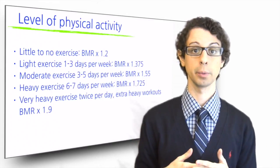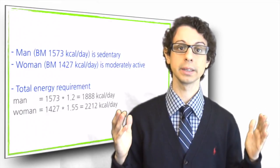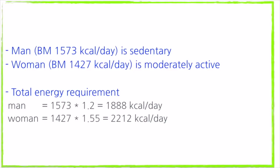Let's suppose that our man is sedentary while our woman is moderately active. His energy requirement would then be 1573 calories times 1.2 equals 1888 calories per day, while hers will be 1427 calories times 1.55 equals 2212 calories per day.